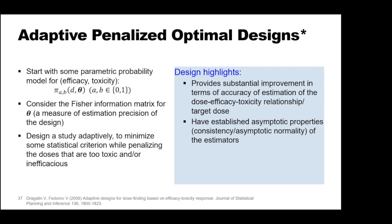The adaptive penalized optimal designs proposed by Dragalin and Fedorov in 2006 are also model-based. The experiment starts with specification of a parametric probability model for efficacy and toxicity. The key object is the Fisher information matrix for the vector of unknown parameters as a measure of estimation precision. The trial is designed adaptively to minimize at each step some statistical criterion while penalizing doses that are too toxic and/or inefficacious. These designs provide substantial improvement in accuracy of estimation of the dose-efficacy-toxicity relationship and the target dose, and they have established asymptotic properties — consistency and asymptotic normality of the estimators.